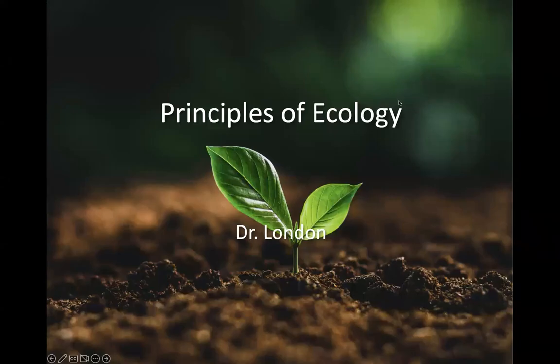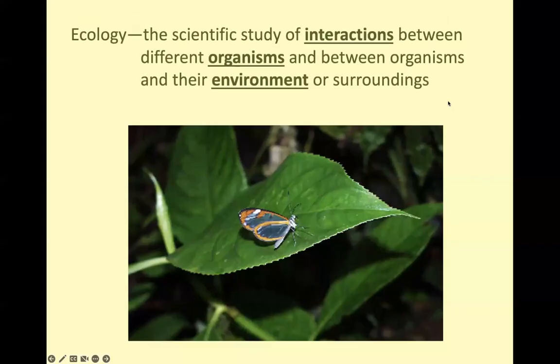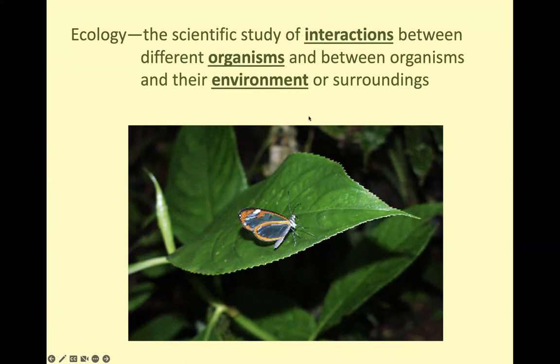Hello, everyone. Today we're going to look at some principles of ecology. We'll start with the definition of what ecology is. Ecology is the scientific study of interactions between organisms and their environment. We've had quite a few conversations up to this point that have allowed us to consider this interdependent relationship between organisms and their environment. When we consider that we are heterotrophic organisms, we rely on our environment to sustain life — we must consume food in order to obtain energy.